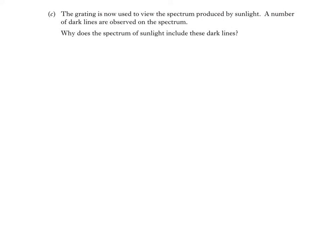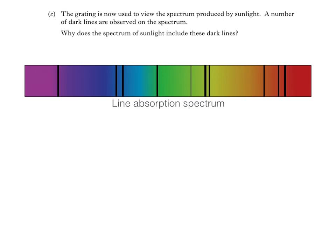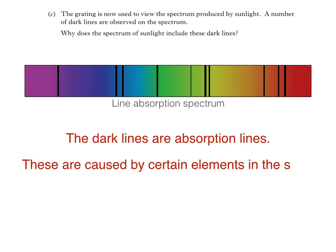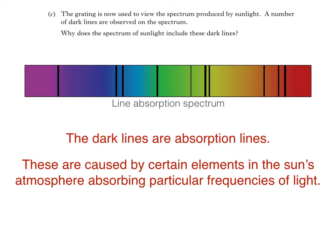This part of the question is describing a line absorption spectrum like this. It's important to mention that these dark lines are absorption lines. These are caused by certain elements in the sun's atmosphere absorbing particular frequencies of light.